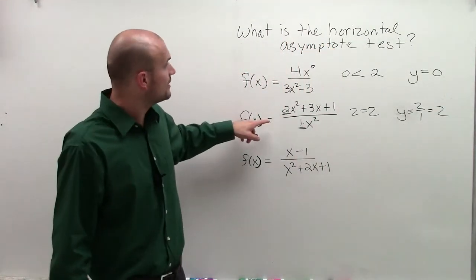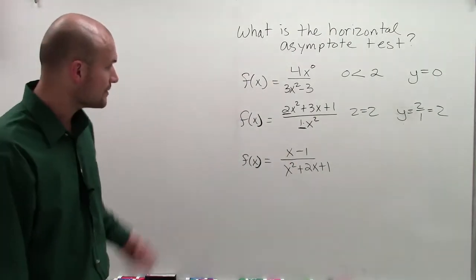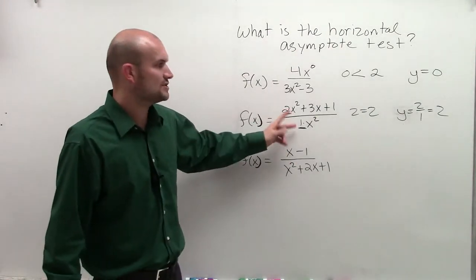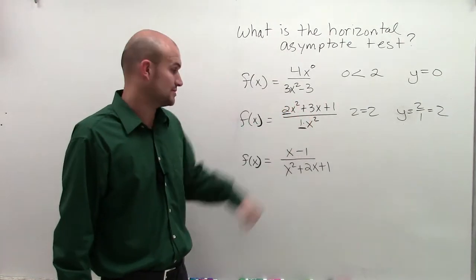So that means for this function, my horizontal asymptote is when y equals 2. So we only take our coefficients and divide them when we have our leading exponent, our leading terms of exponents are equal to each other.